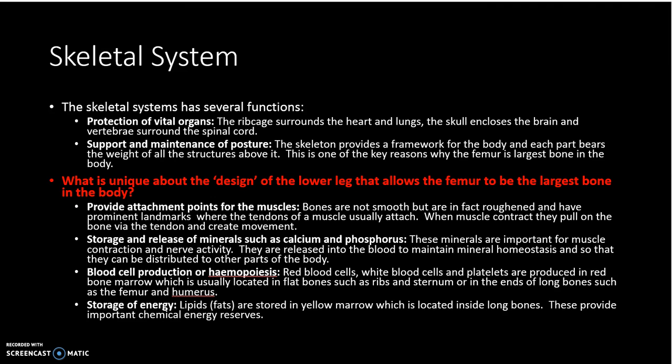Our bones provide attachment points for the muscles. Muscles attach to bones via tendons, and the bones provide roughened or enlarged areas for those tendons. Bones are also a place where minerals such as calcium and phosphorus are stored, and when required those minerals are released into the bloodstream to be transported around the body. In the cancellous tissue of our long bones is where red blood cells are created. Red blood cells are very important for the transport of oxygen around the body, which is incredibly important for energy production and muscular movement.